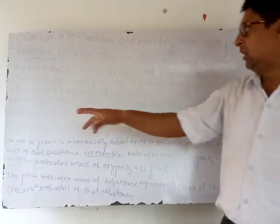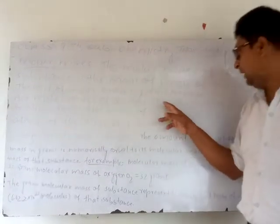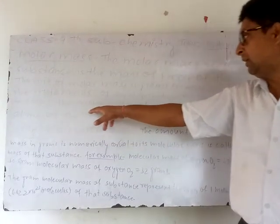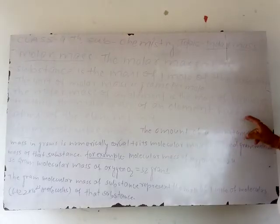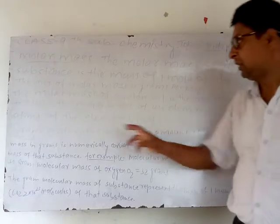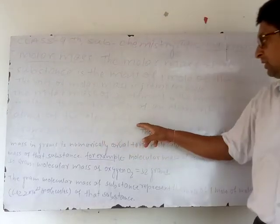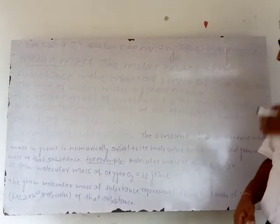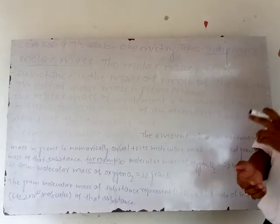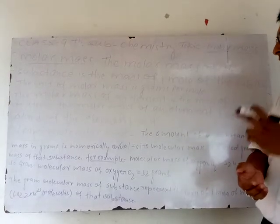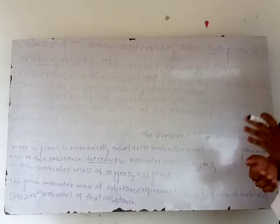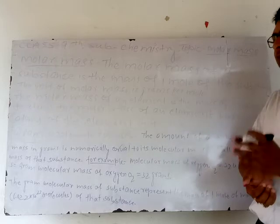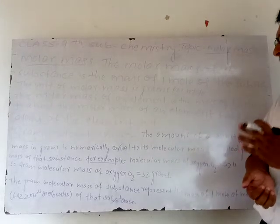The molar mass of an element is the mass of one mole of its atoms. The molar mass of an element has 6.022 × 10^23 atoms of the element. One mole of atoms contains 6.022 × 10^23 atoms of the element in its mass.